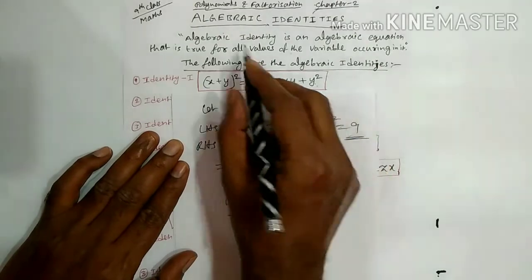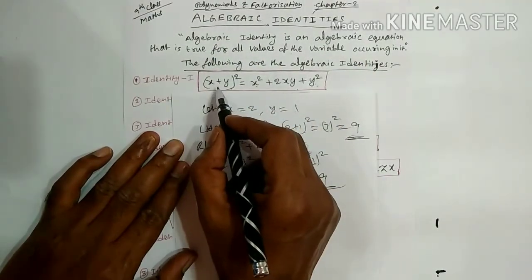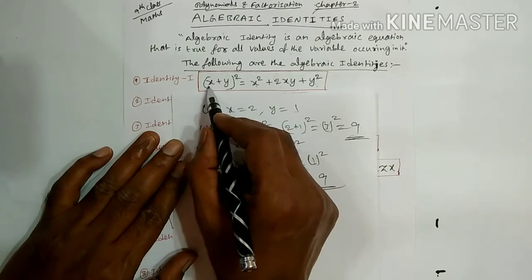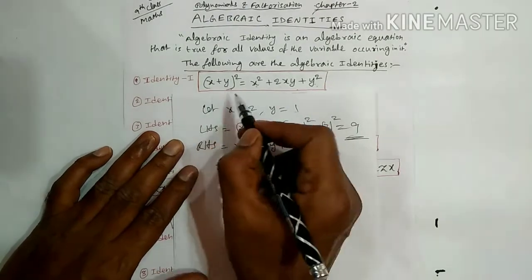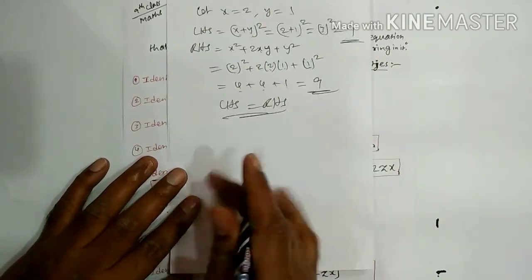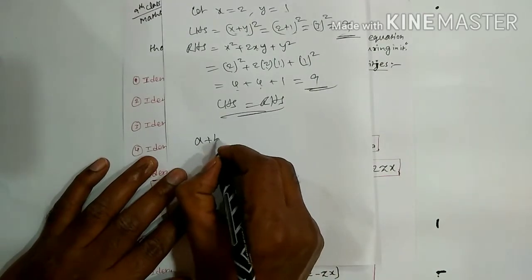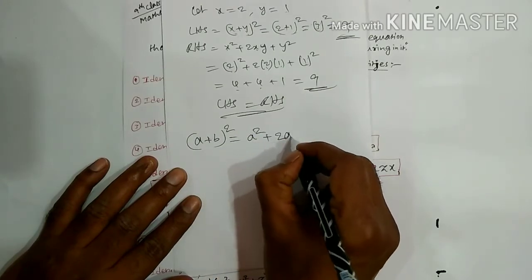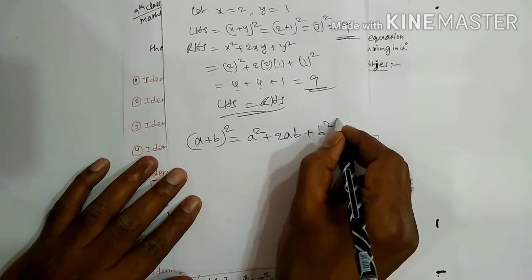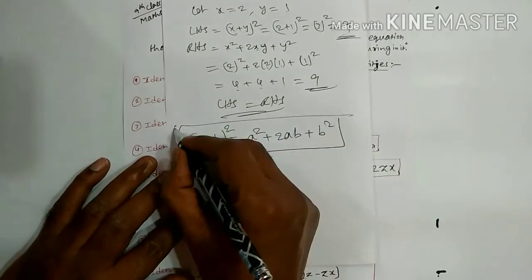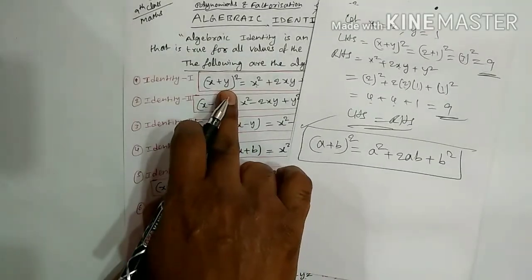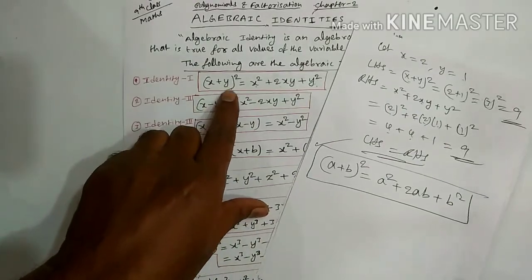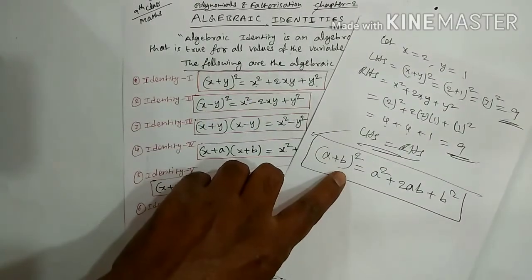So LHS is equal to RHS, therefore this is an identity. That is the definition — whenever LHS equals RHS when values are substituted in the variables. Sometimes the same formula can be written as A plus B whole square equals A square plus 2AB plus B square. You can use X, Y or A, B as variables — no problem.